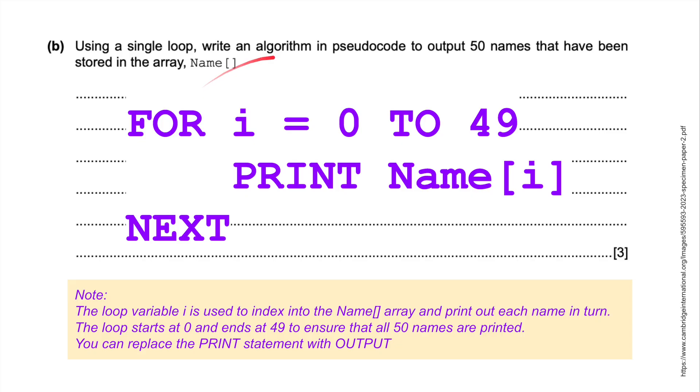Using a single loop, write an algorithm in pseudocode to output 50 names that have been stored in an array name. So it's a for i in range loop. For i equals 0 to 49. Consider the first value as being 0. You could have put 1 to 50, I don't think it matters. Print name for i. So all the names that are stored in the array. And next. So keep looping around and printing the 50 names out. The loop variable i is used to index in the names array.